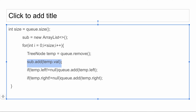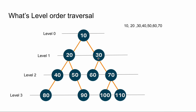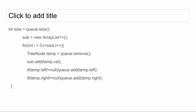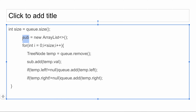But what is zigzag level order traversal? In zigzag level order traversal there is just one additional step. If the level is an odd number — for example level 1 — instead of adding 20 and 30 in that order, we add 30 and 20, so the order gets reversed. For level 2 it remains the same: 40, 50, 60, 70. But for the next odd level — 80, 90, 100, 110 — the order will be reversed to 110, 100, 90, 80. So we just keep track of the level, and if the level is odd we reverse the entire sub-list for that level.